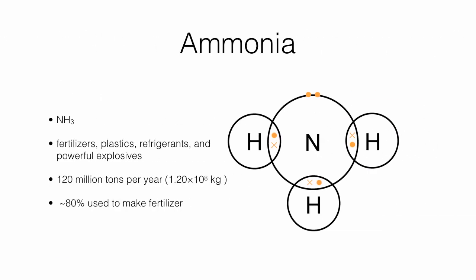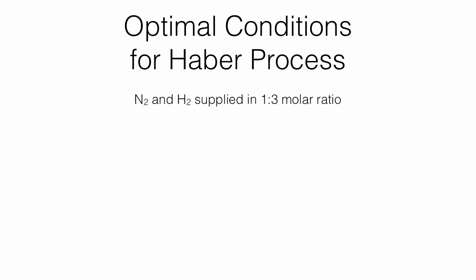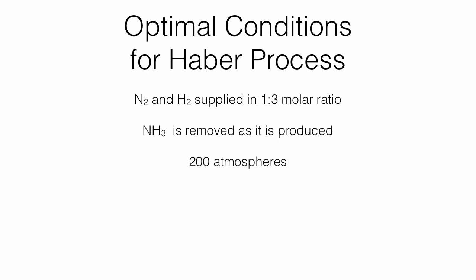So how do we make all this stuff? The Haber Process. We can see that there are four gas moles on the left of this equilibrium and two gas moles on the right. This equilibrium is exothermic in the forward direction and endothermic in the reverse direction. Using our knowledge of Le Chatelier's Principle, we supply the reactants in the 1 to 3 molar ratio and constantly remove our product as it's produced. Both of these things shift the equilibrium to the right, which is where we want it. They use extremely high pressure — 200 atmospheres.